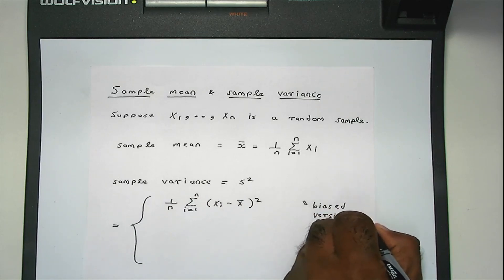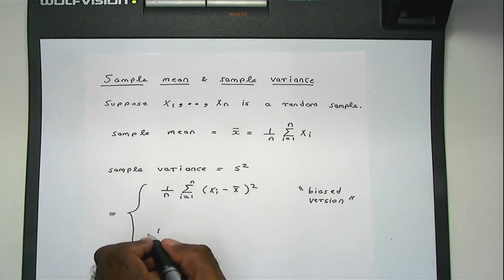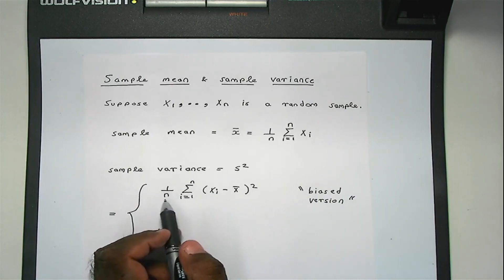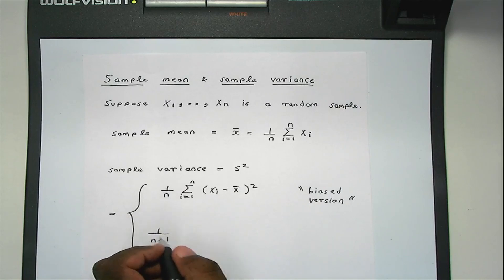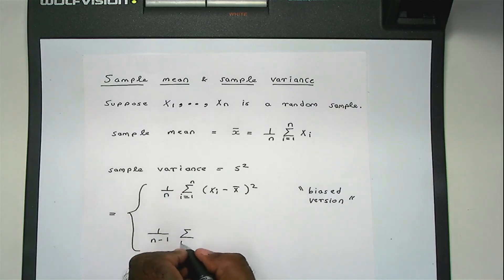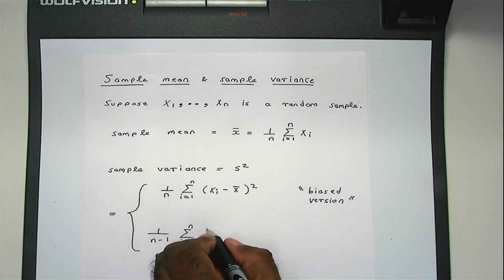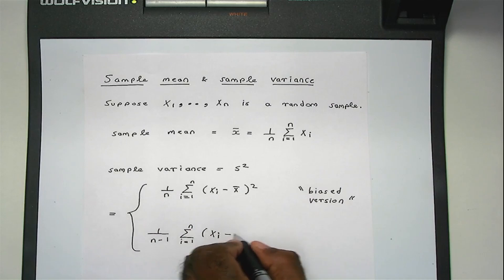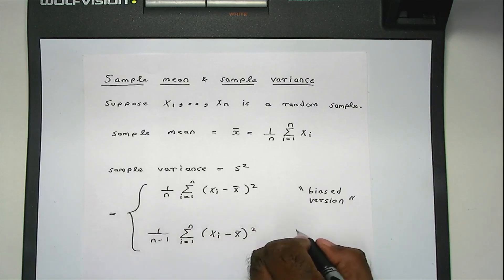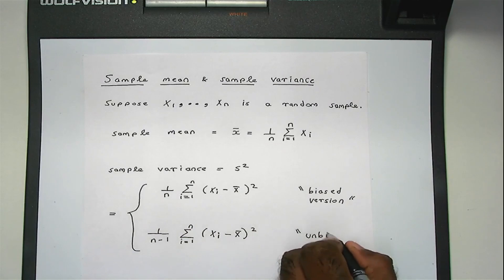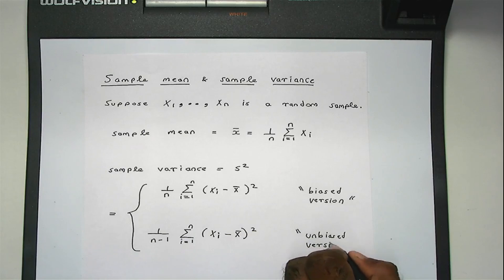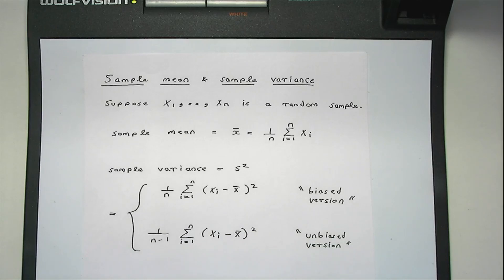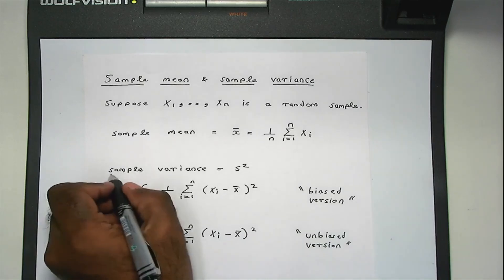There's a second definition which, instead of 1 over n, has 1 over n minus 1, and there's a reason for that which I will explain later in the course. This is known as the unbiased version of the sample variance. So this is the sample variance, and this is the sample mean.